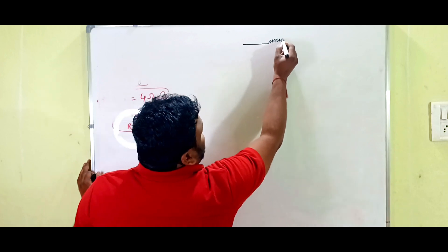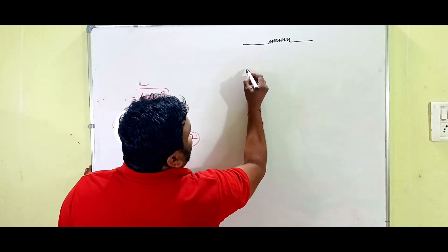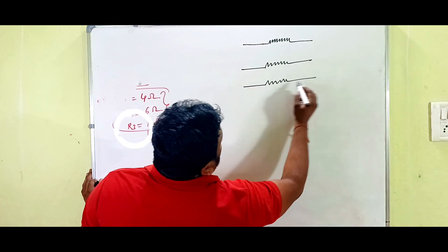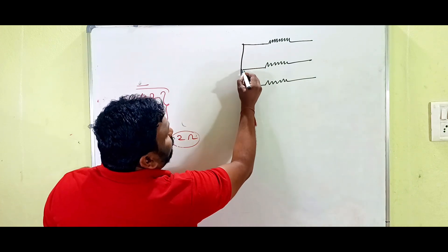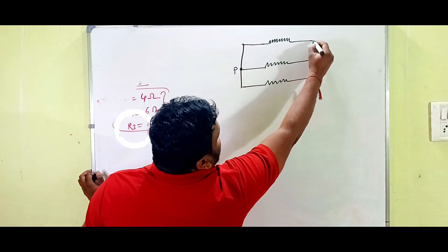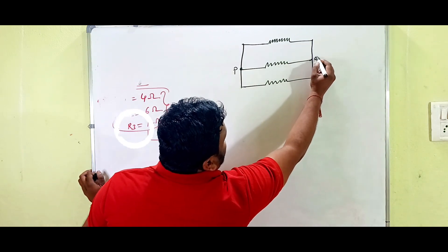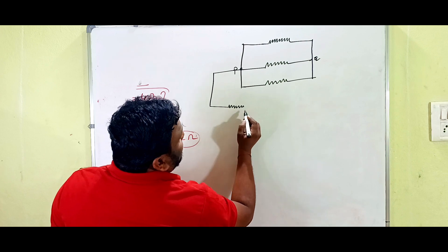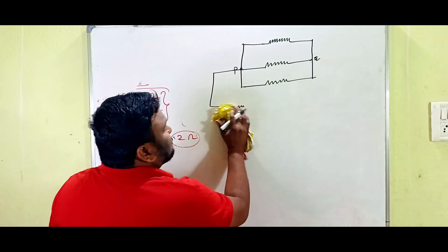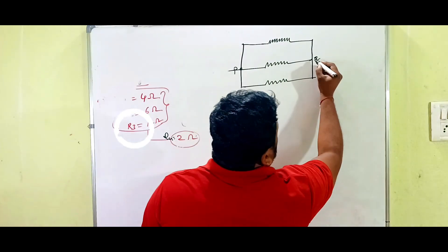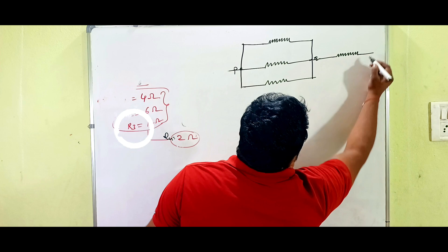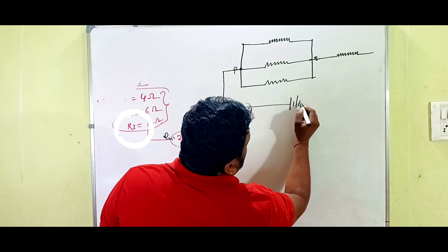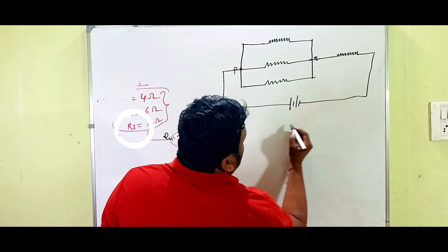Let me re-draw the diagram. R1, R2, and R3 are in parallel — their first ends are given to point P and second ends to point Q. From point Q we connect one more resistor in series. In series, you can draw it clearly like this.